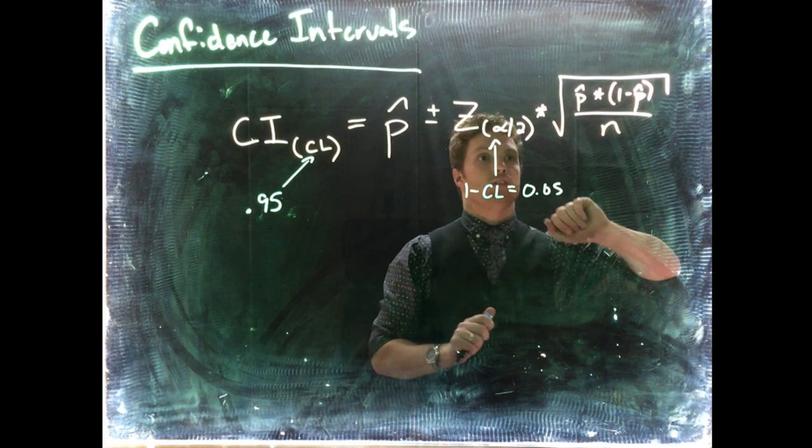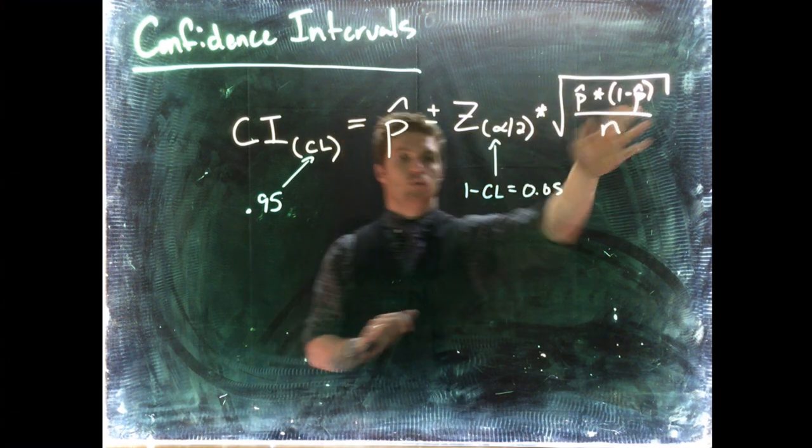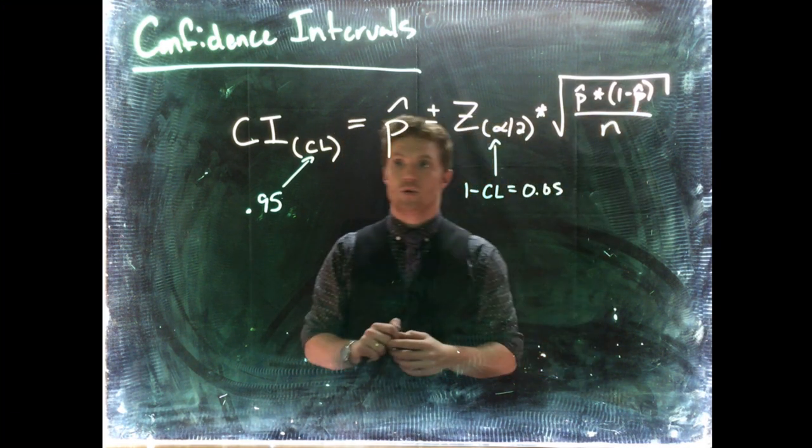Alright, n is still just our sample size, and p hat is the sample proportion. Once we get those, we can solve out this equation pretty quickly.